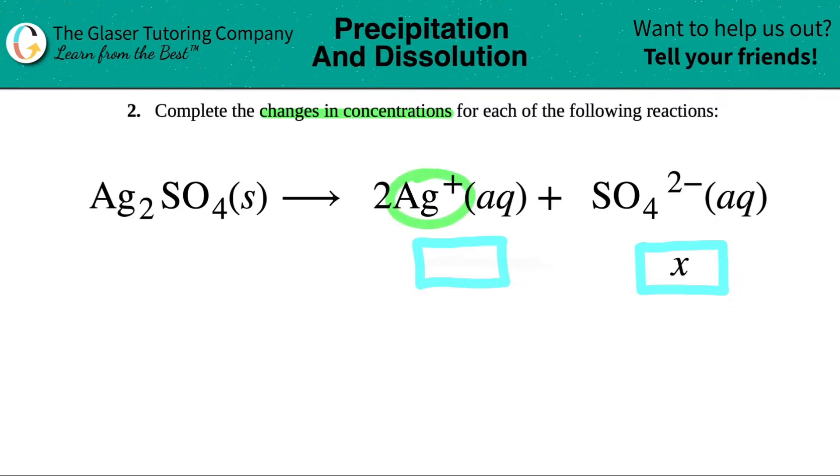So I'm going to just look at the Ag. I see that there's a two in front of here. And in front of the sulfate, I don't see a number. But remember, anytime that you don't see a number, what number is this really? Yeah, you only have one of them. So I have one sulfate for every two silvers, right? One SO4 for every two Ags.